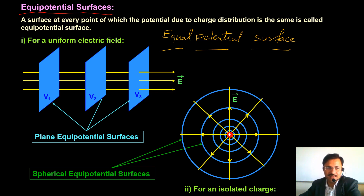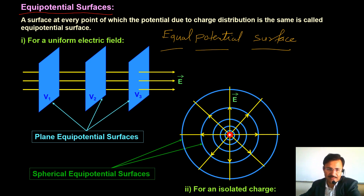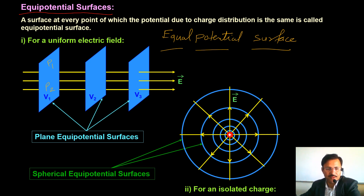You can see these yellow lines — these are uniform electric field lines. Three surfaces v1, v2, and v3 are shown; these are equipotential surfaces. If I consider any point p1 or p2 on surface v1, the potential at point p1 will be equal to the potential at point p2.